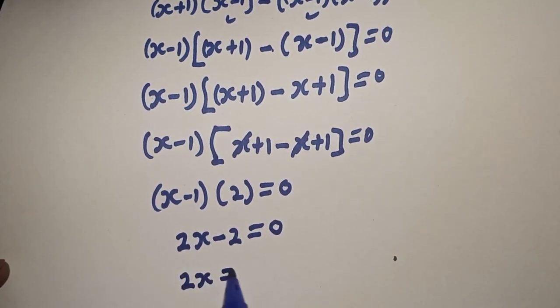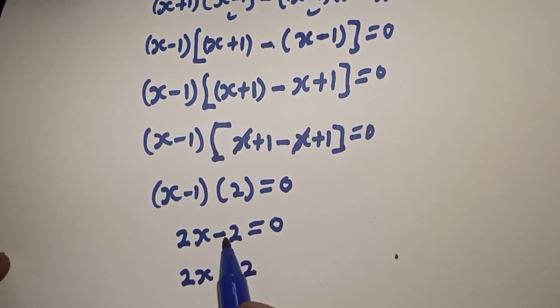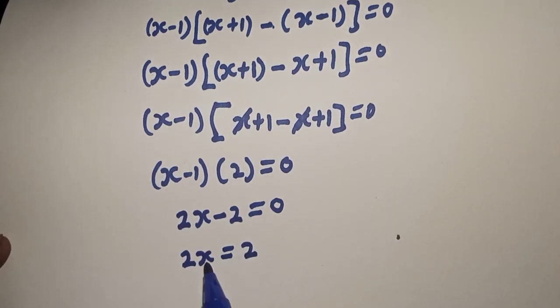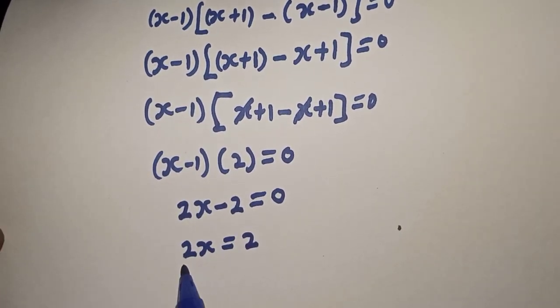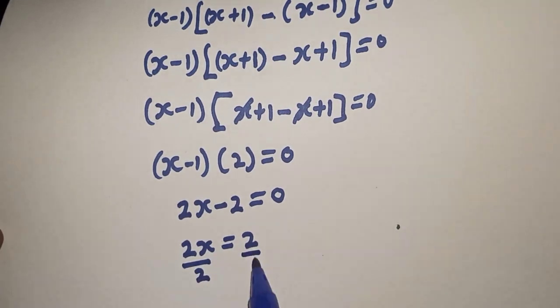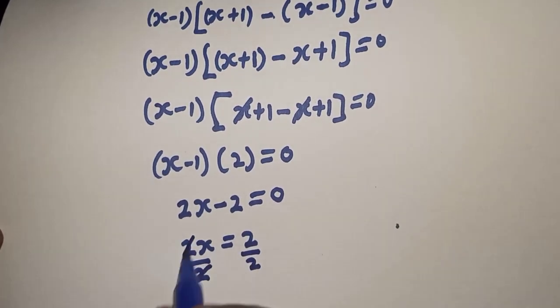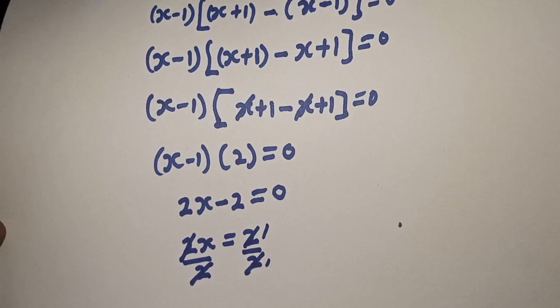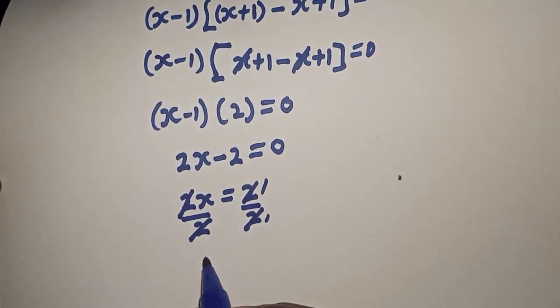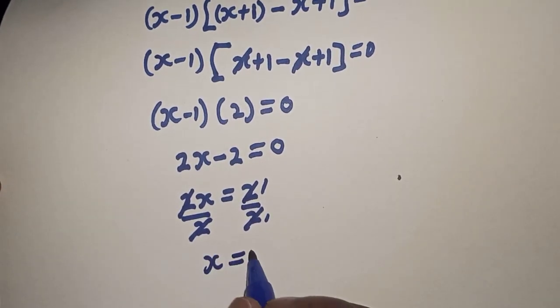2s is equal to 2. If this minus 2 comes to the other side, let's divide both sides by 2. Divided by 2, divided by 2. This one will cancel. Then s is equal to 1.